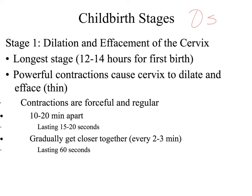The contractions are typically forceful and regular, about 10 to 20 minutes apart, lasting about 15 to 20 seconds. As they get closer to the second stage, the contractions start getting closer together — every 2 to 3 minutes — but they last longer.